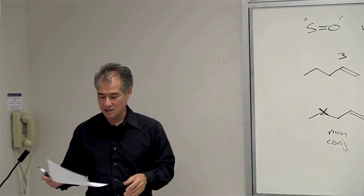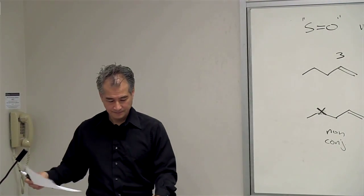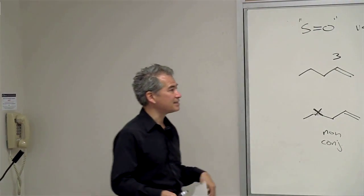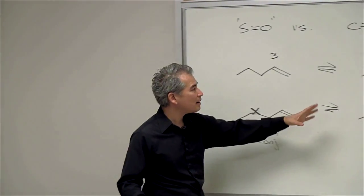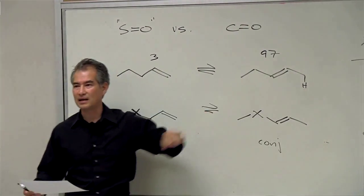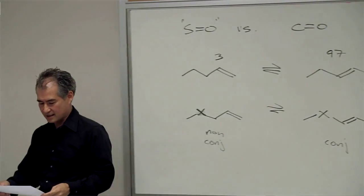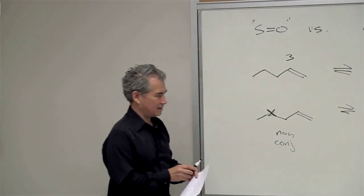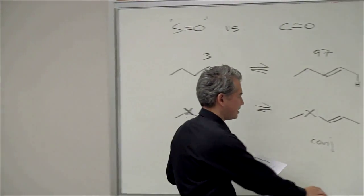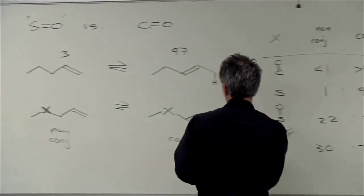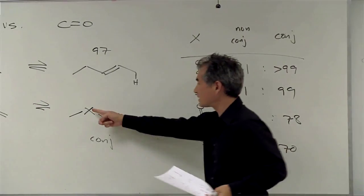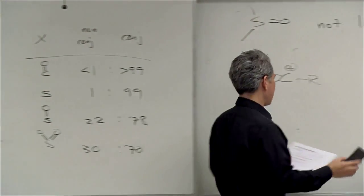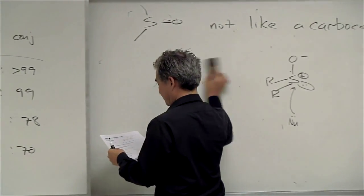Don't think of the S-O double bond as anything like a C-O double bond. A double bond cannot conjugate with an S-O double bond the way it can with a carbonyl group — it's not the same kind of interaction.